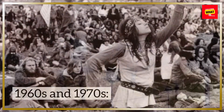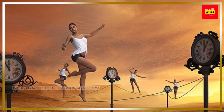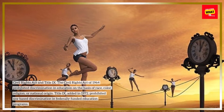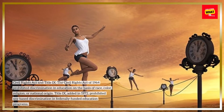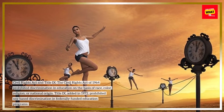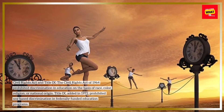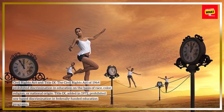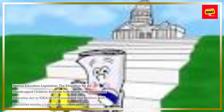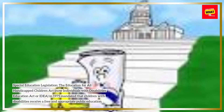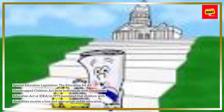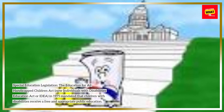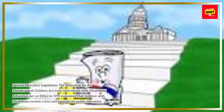1960s and 1970s. The Civil Rights Act of 1964 prohibited discrimination in education on the basis of race, color, religion, or national origin. Title IX, added in 1972, prohibited sex-based discrimination in federally funded education programs. The Education for All Handicapped Children Act — now the Individuals with Disabilities Education Act, or IDEA — in 1975 mandated that children with disabilities receive a free and appropriate public education.